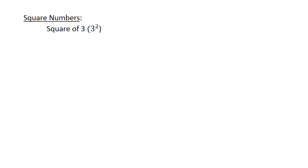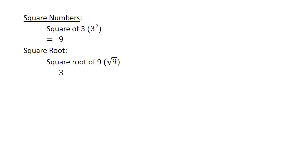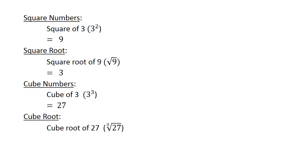Square numbers: the square root of 3 equals 9. Square root of 9 equals 3. Cube numbers: the cube of 3 equals 27, and the cube root of 27 equals 3.